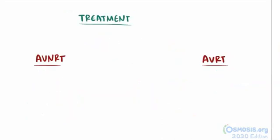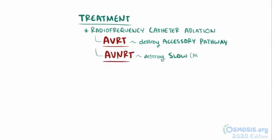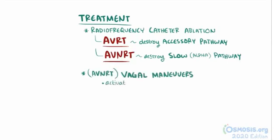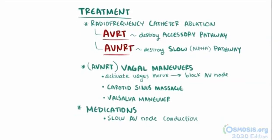The definitive treatment for either AVRT or AVNRT is radiocatheter ablation — essentially destruction of the accessory pathway with AVRT, and destruction of the slow or alpha pathway with AVNRT. For AVNRT, sometimes people can use vagal maneuvers as well, which are ways to activate the vagus nerve, which tends to block the AV node temporarily, therefore potentially stopping the episode. Some methods include carotid sinus massage as well as a Valsalva maneuver, which is forced exhalation against a closed airway. Also, they might use medications to slow AV node conduction. In rare cases where other treatments haven't been effective, they might need cardioversion.